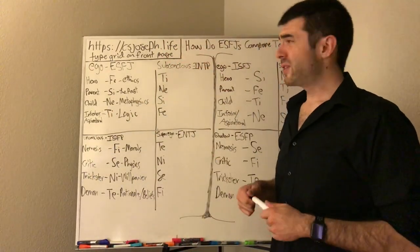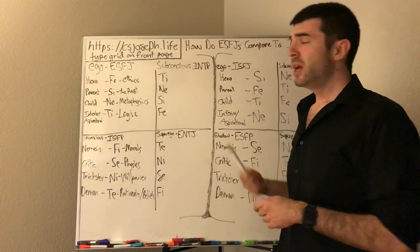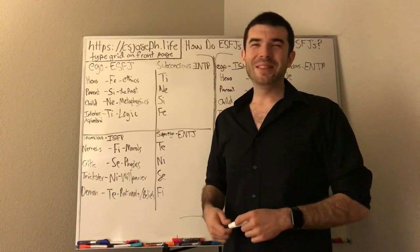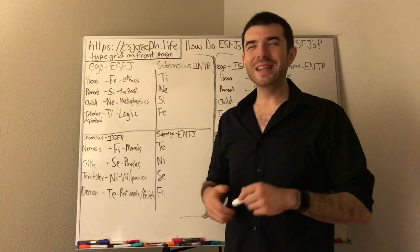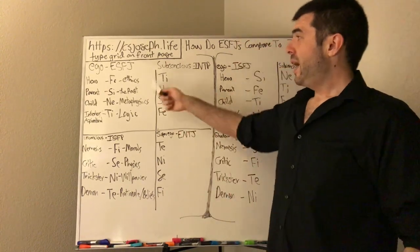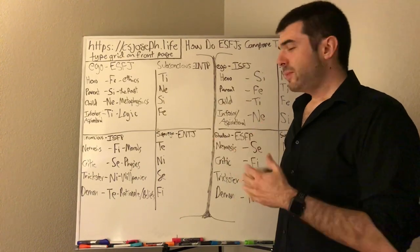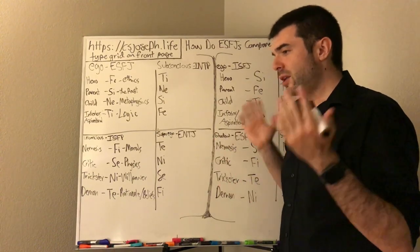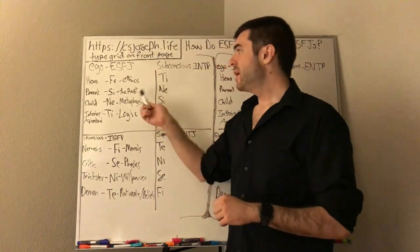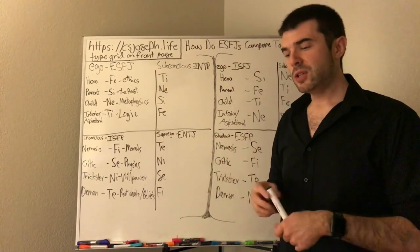But ISFJs are actually willing to allow you to do the dishes for them because they're not always willing to do it all the time. They'll do it because that's what they should do. But having a respite to them means a lot more than to an ESFJ. So back to the functions, because we're jumping around all over the place. But that's okay.